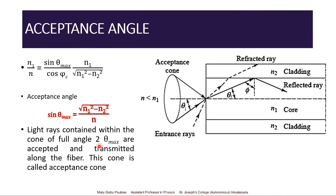Using this expression in Snell's law, we get n1/n = sin θmax / cos φc = n1 / √(n1² − n2²). Therefore the acceptance angle sin θmax = √(n1² − n2²) / n. The light rays contained within the cone of full angle 2θmax are accepted and transmitted along the fiber.